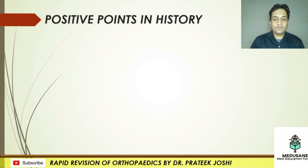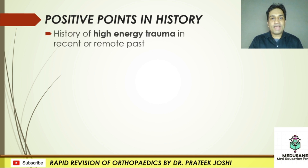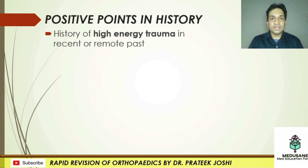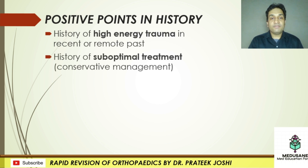First and foremost, we must start any short case with either the diagnosis or the positive points in history which are supportive of your diagnosis. In a case of non-union, the patient will have a history of high energy trauma in the recent or remote past — such as a road traffic accident, a fall from a height, or an assault which happened a couple of years or months ago. Second, there will always be a history of suboptimal treatment, such as conservative management, going to a bone setter, or being operated in a conventional orthopedic setup with some sort of complications.